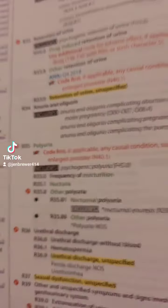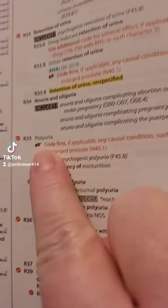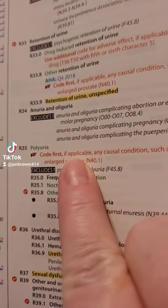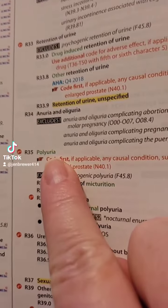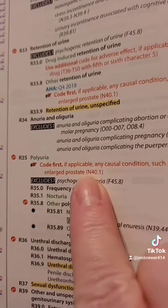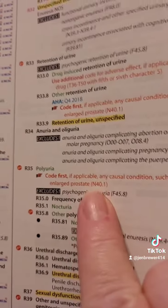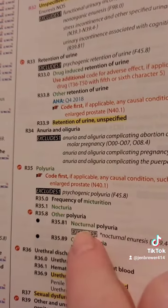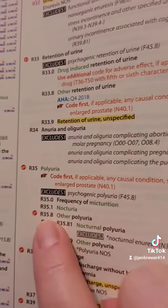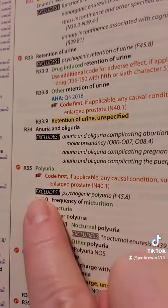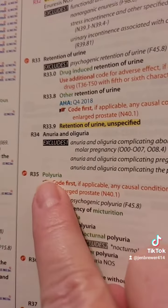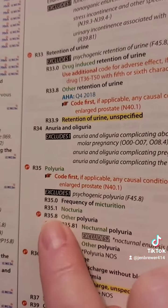So what this means is that polyuria cannot be coded first, because you don't get polyuria for no reason — you usually get it because of an enlarged prostate. Enlarged prostate will be your first diagnosis. You cannot use polyuria simply as a diagnosis, even if you're going to use it as the second.